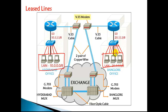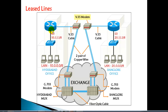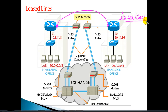I want to ensure that a user sitting in the Hyderabad LAN can communicate with users on a different network. For that, I need to contact the service provider, who is going to provide a line connecting from one router to another router. Let's say I contact a service provider and it provides me a leased line connection — let's understand how that works.